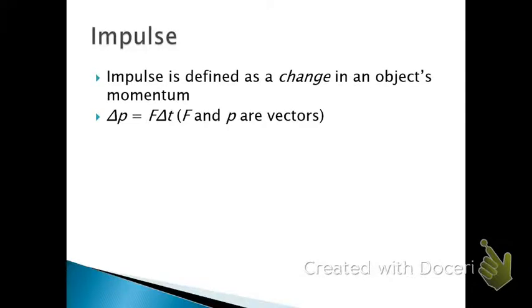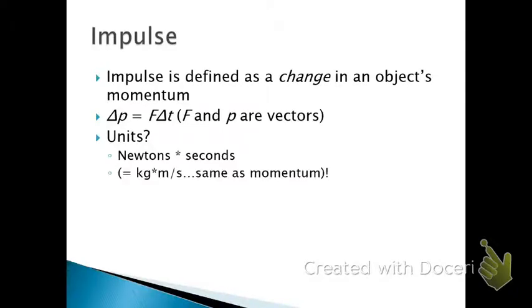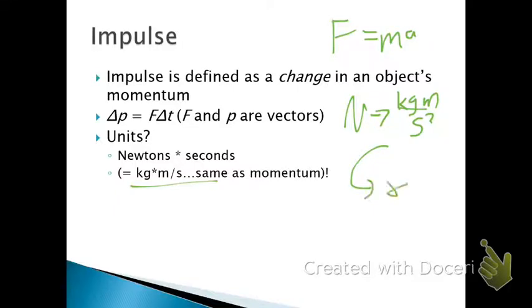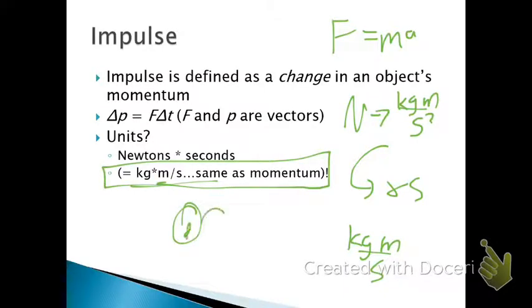Another way to describe impulse is by force times change in time. So the units of this thing are just going to be newtons times seconds. A newton of force times a second. That's actually going to simplify down to just a kilogram meter per second. If you think about what a newton is from f equals ma, a newton is a kilogram meter per second squared. If I multiply that by time, then one of the second squareds cancel. I get just kilogram meter per second. And look at that. It's the same unit as momentum.